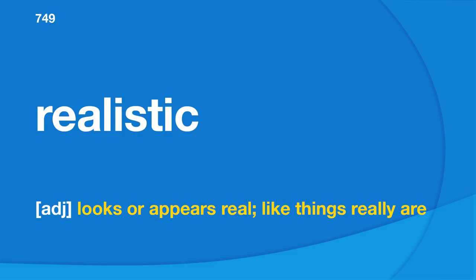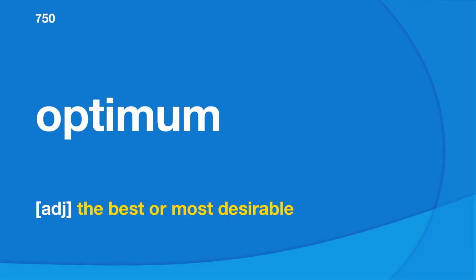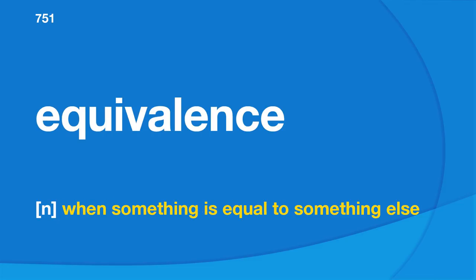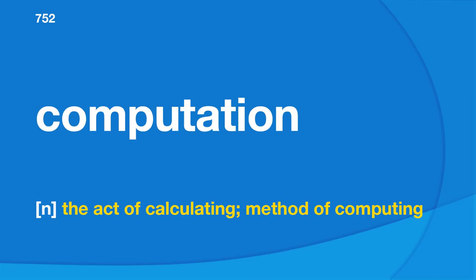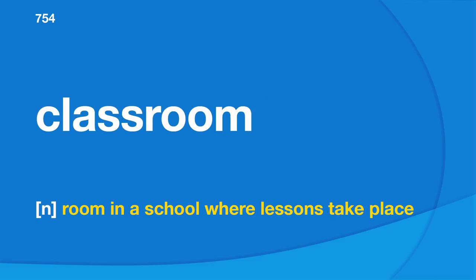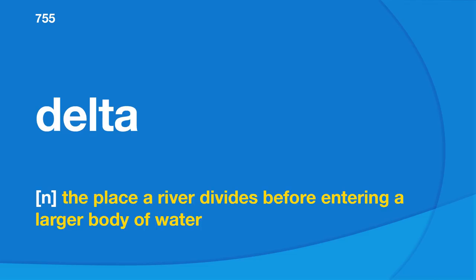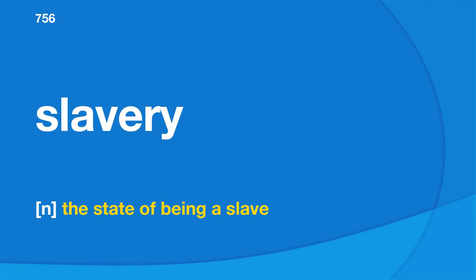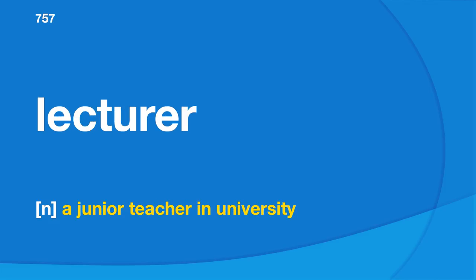Computation: the act of calculating, method of computing. Questionnaire: form used to get information from many people. Classroom: room in a school where lessons take place. Delta: the place a river divides before entering a larger body of water. Slavery: the state of being a slave. Lecturer: a junior teacher in university. Cure: a medicine or treatment that makes an ill person become healthy. Atom: smallest bit that matter can be broken down into.